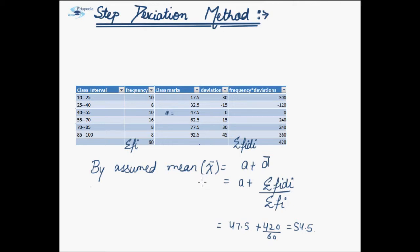It said that to calculate mean of observations for a given data, the mean is assumed mean plus mean deviation. We have simplified the calculation process in this method as compared to the direct method. Now, to further simplify the calculation part, let us again work upon the deviation column.